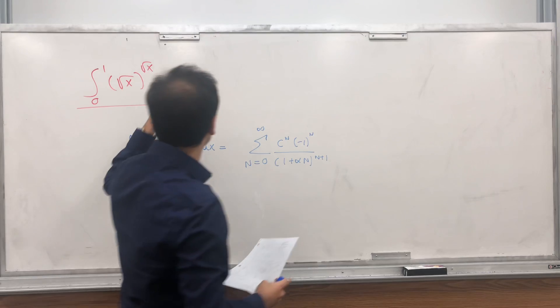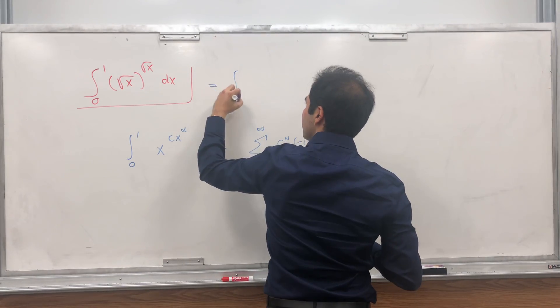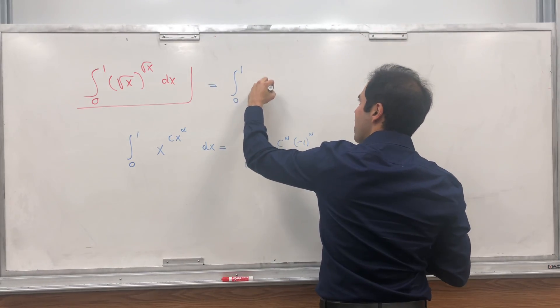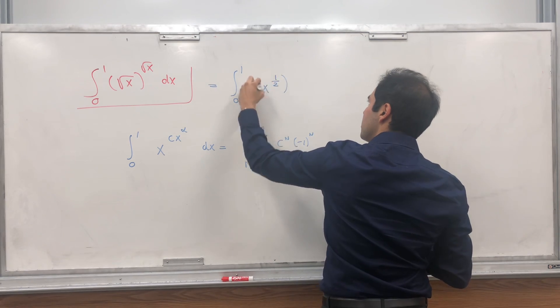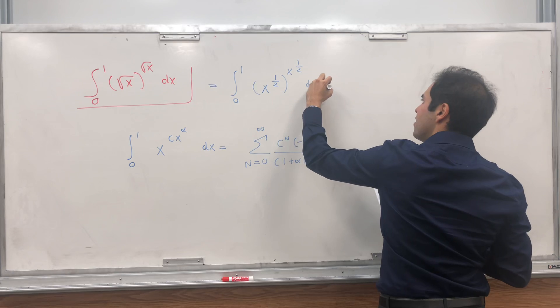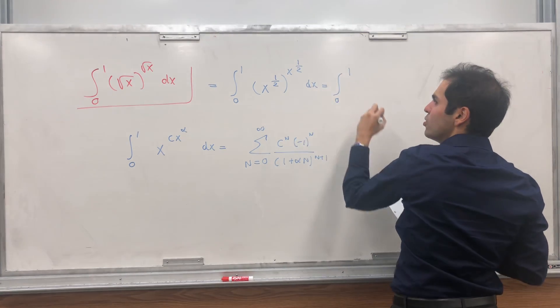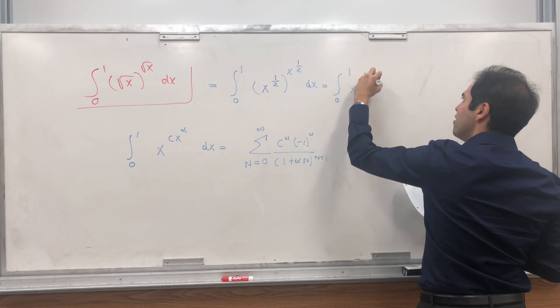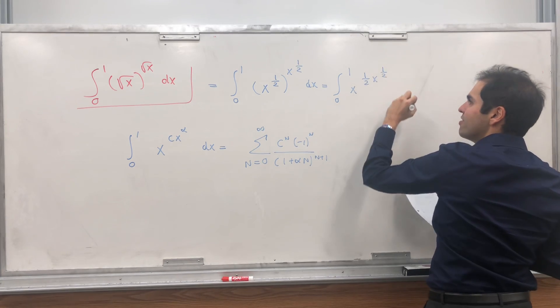Notice this integral is of this form because it's the integral from 0 to 1 of x to the 1 half, to the x to the 1 half dx, which is the integral from 0 to 1 of x to the x to the 1 half dx.